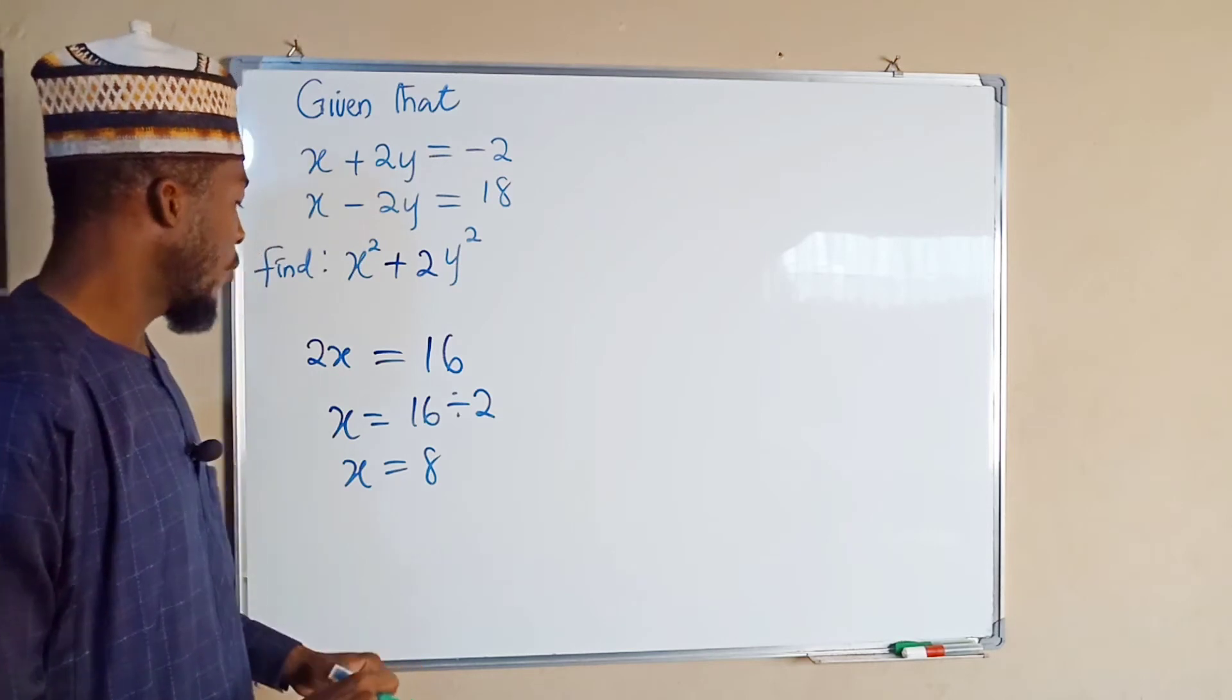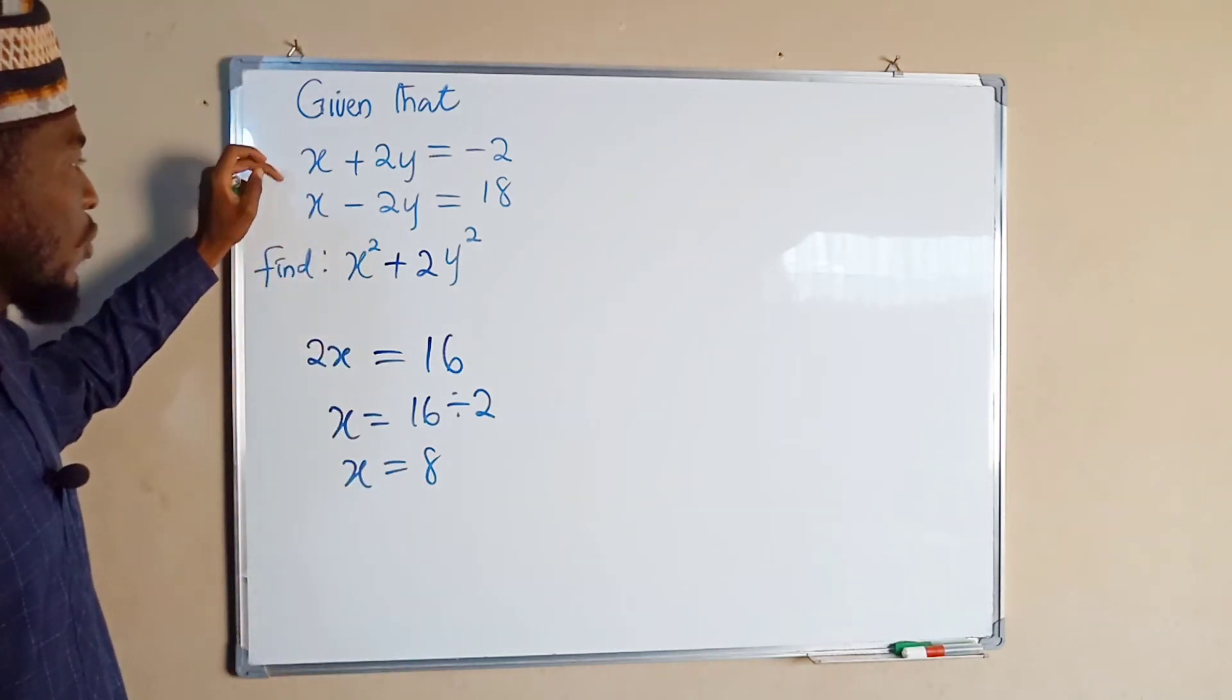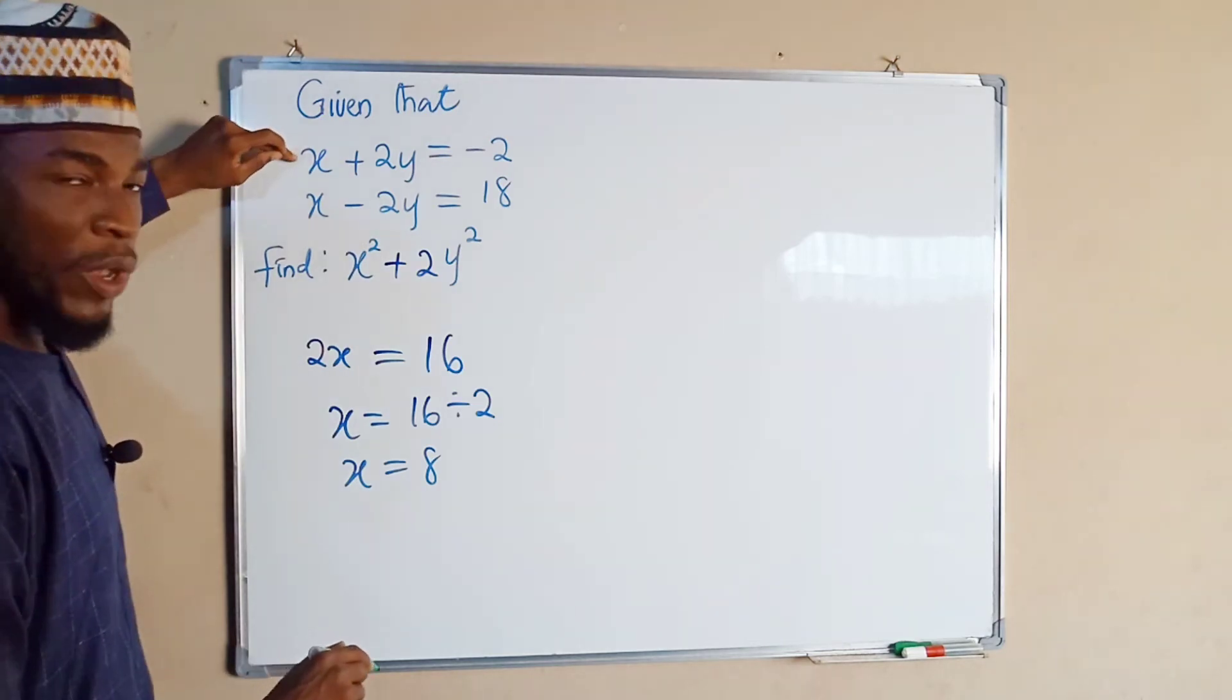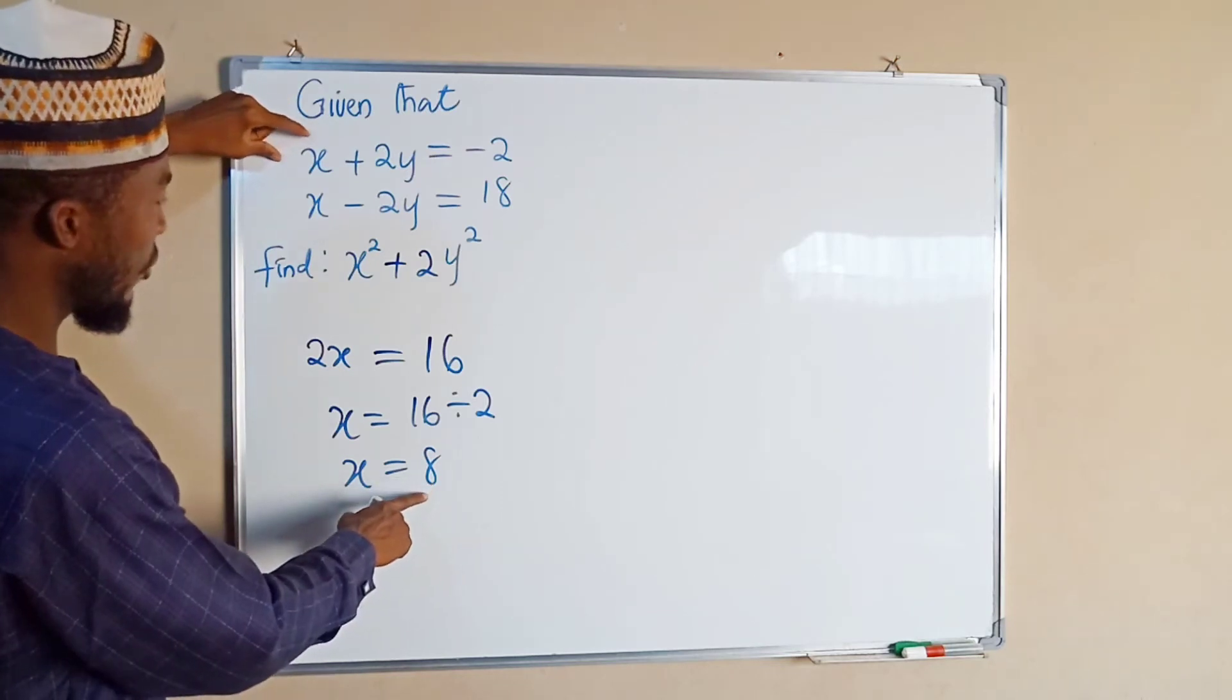From equation 1, you can see that x + 2y = -2, but x is equal to 8, so we have 8 + 2y = -2.